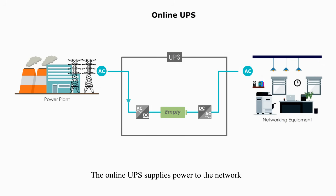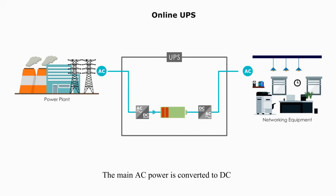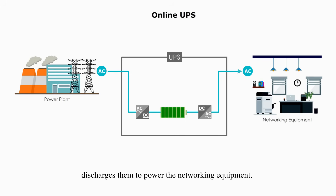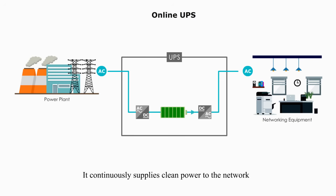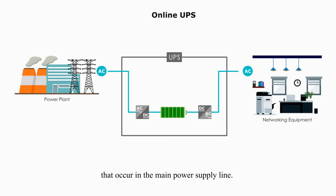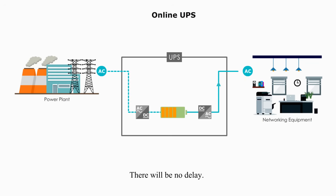The online UPS supplies power to the network from the batteries at all times. The main AC power is converted to DC, which first charges the batteries and then discharges them to power the networking equipment. The online UPS does not require a switching mechanism. It continuously supplies clean power to the network, regardless of power quality problems in the main supply line. Whenever there is a blackout, the battery continues to supply voltage to the network — there will be no delay.